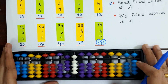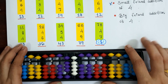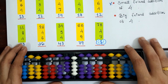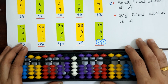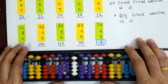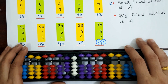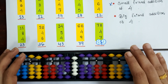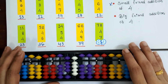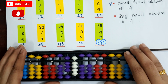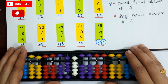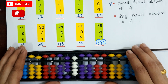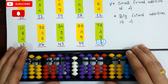Here we have done all 10 examples. I hope you understood well how and when you can apply the big friend addition of 4. If you still have any doubt, write to me in the comment section below. If you are practicing every day, you can see the improvement in your calculation speed. If you find this video helpful, please do like, share, and subscribe to my channel, and don't forget to hit the bell icon to get all notifications of my latest videos. Thank you everyone for watching.